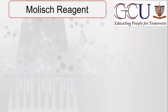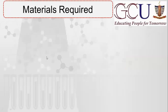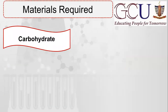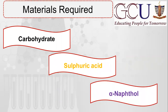Molisch reagent क्या है — यह 1% alpha-naphthol का ethanol में solution है. Alpha-naphthol का ethanol में 1% solution बनाया हुआ है जिसको Molisch reagent कहते हैं. Materials में हमें carbohydrate चाहिए जिसकी identification करनी है, sulfuric acid चاहिए, और alpha-naphthol चاहिए.